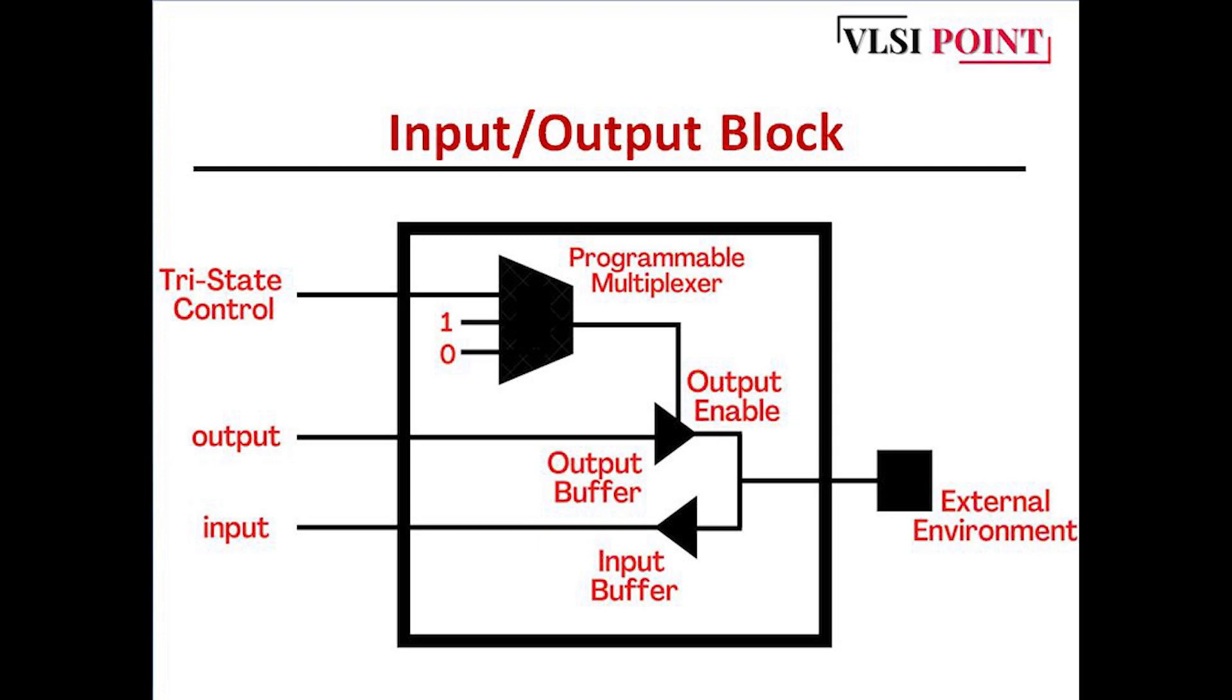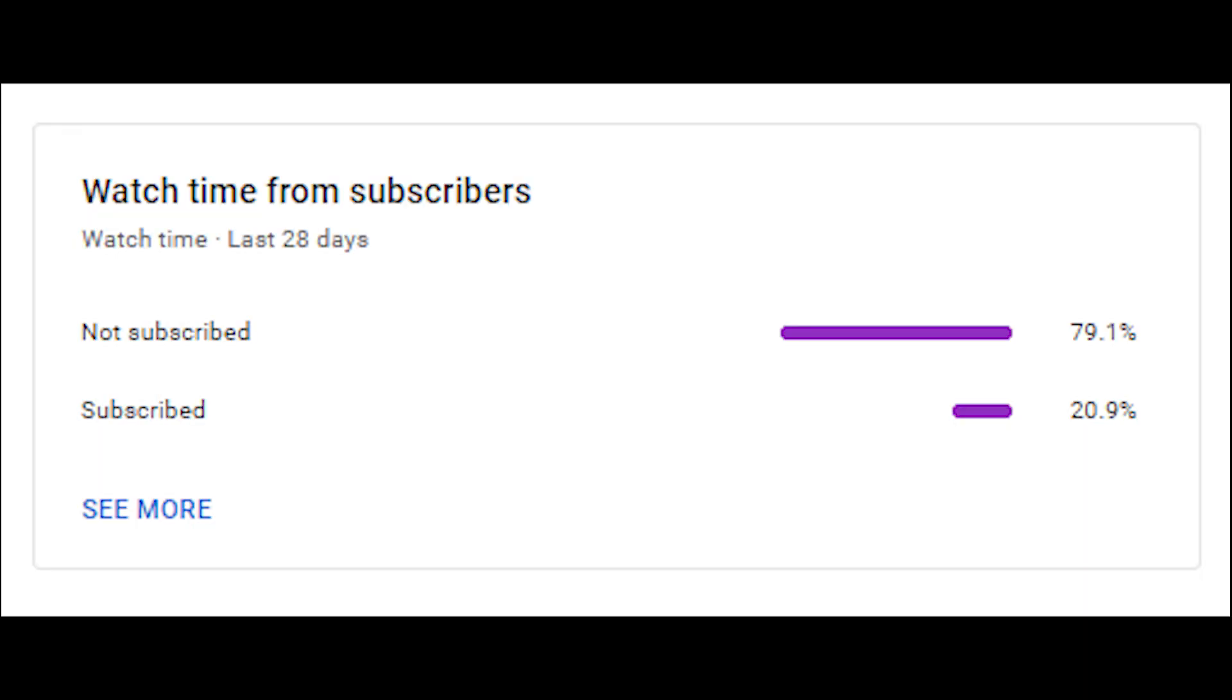Here we have understood the entire FPGA block diagram: how CLBs are working, how programmable interconnects are working, and how these input output blocks are working. If you have any doubts, let me know in the comment box and don't forget to join our telegram community. Already 600 plus members are there discussing their doubts, sharing useful materials, and getting job updates. This is about today's video. We will meet in the next video. See you soon.